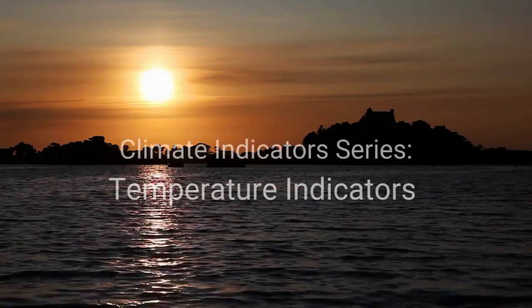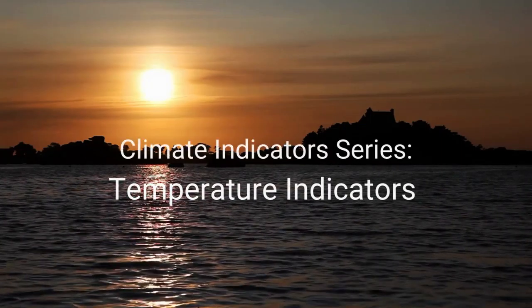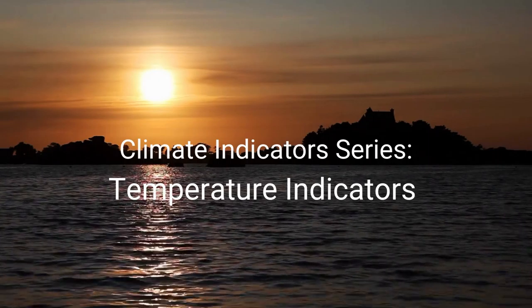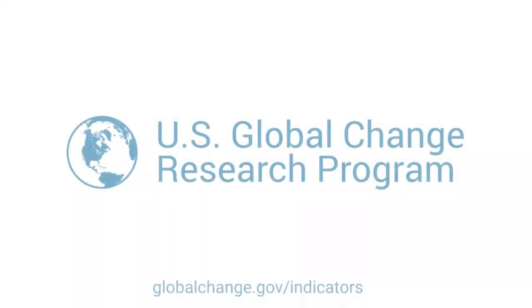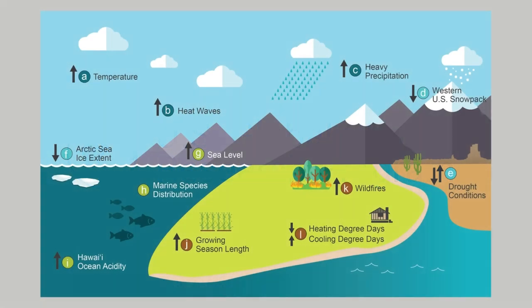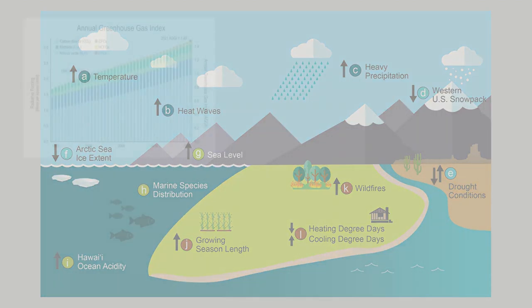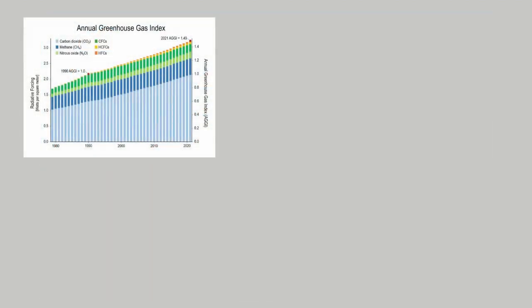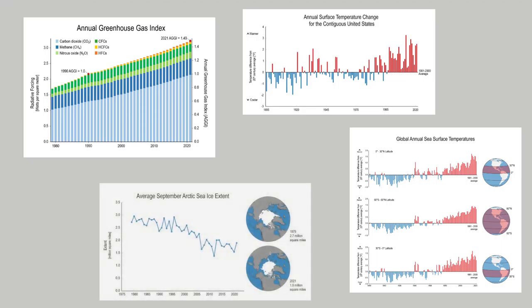Welcome to our Climate Indicators series. This episode is on temperature indicators. This information is gathered from the U.S. GCRP indicator platform. Climate indicators show trends over time in key aspects of our environment, including greenhouse gas levels in the atmosphere, temperatures across land and sea, and extent of Arctic sea ice. To learn more about climate indicators, make sure to check out our separate video here for a quick introduction.